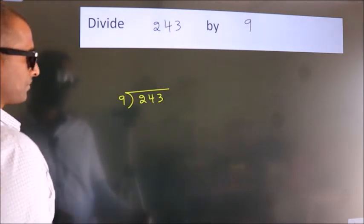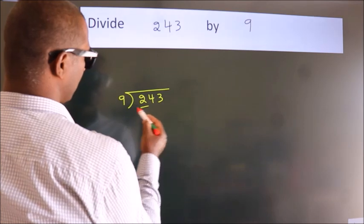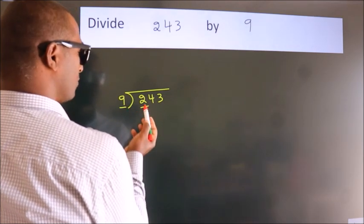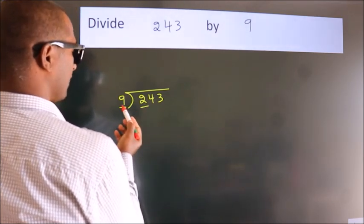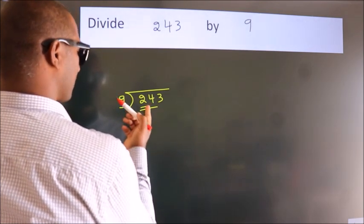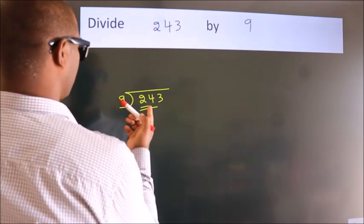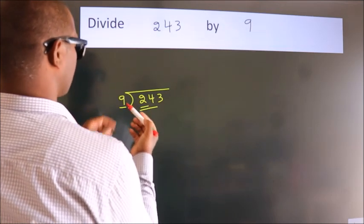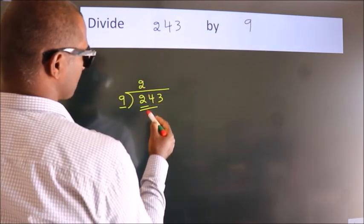Next, here we have 2. Here 9. 2 smaller than 9, so we should take 2 numbers: 24. A number close to 24 in 9 table is 9 times 2 is 18.